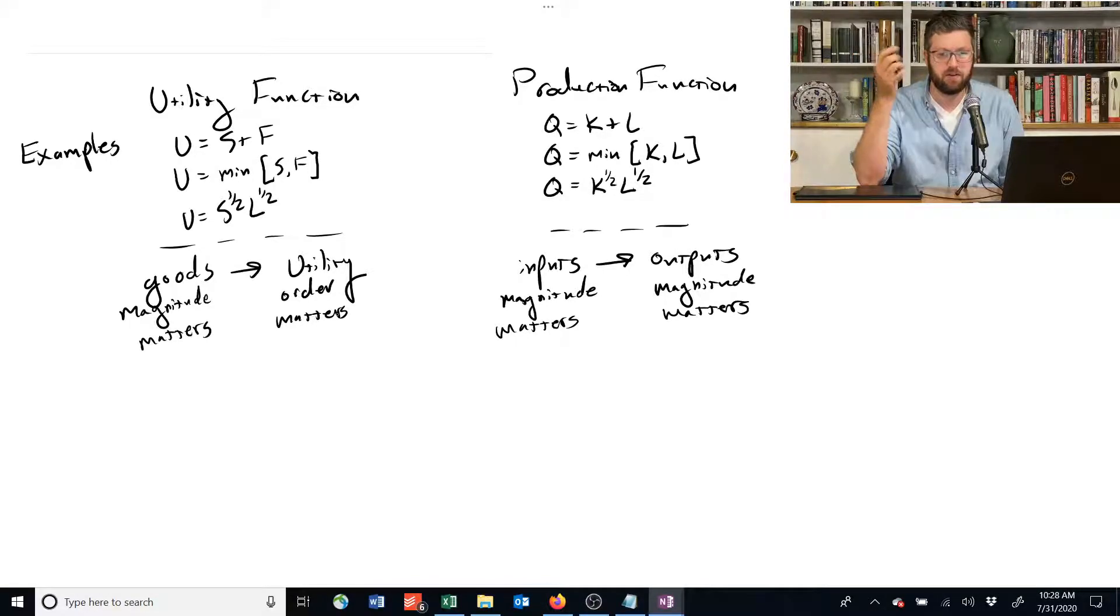But in a production function, if we doubled the outputs from three to six, that has real consequence. That actually means we have more stuff that we can observe. We'll be able to see a real effect in the real world. So these are some other differences and similarities.